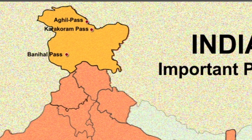Next one is Burzil Pass. Burzil Pass is an ancient pass and caravan route between Srinagar in Kashmir and Gilgit.